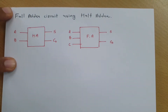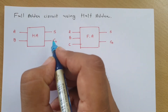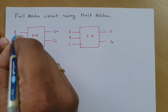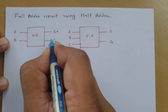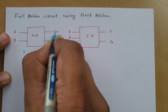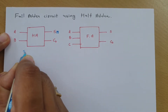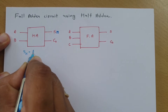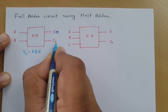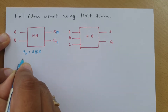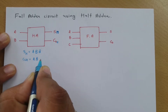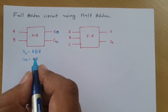For the half adder, the sum output is the XORing of inputs. So SH equals A XOR B. And the carry for the half adder, C0, equals A dot B. So that is what we have derived.